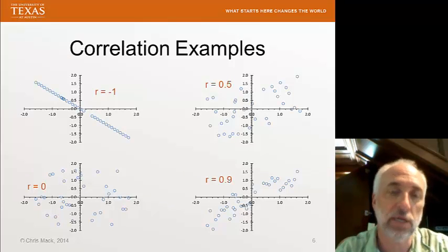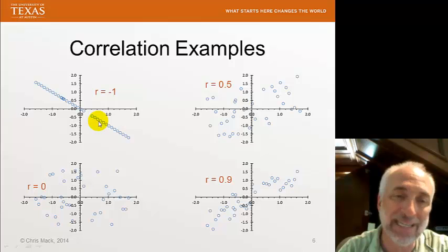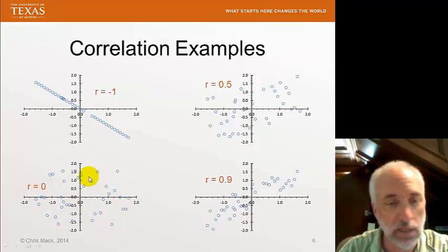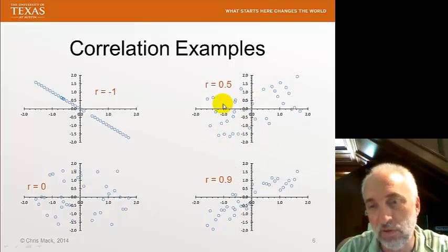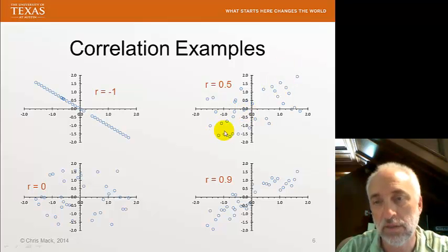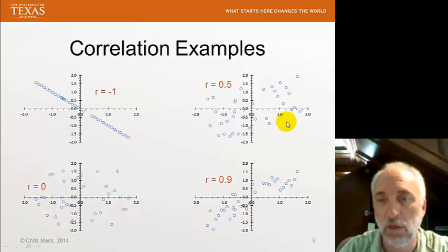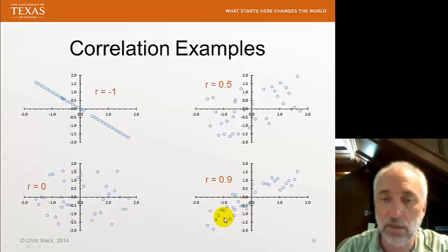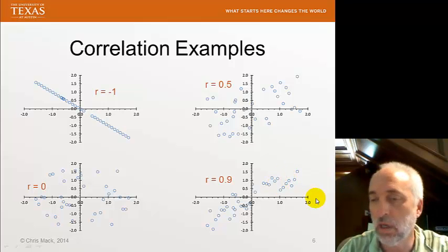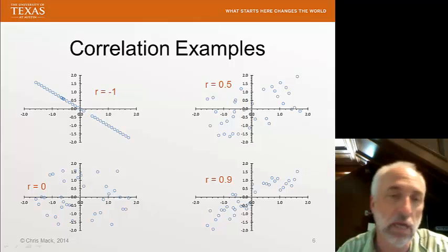Here's some examples of correlation. Here's R equal to minus 1. You see, it's a perfect straight line. It happens to be sloping downward. Here's R of 0. That's pretty much random scattering of data points. There's no general trend to be observed. And I see R equal to 0. Here's R of 0.5. There is a general trend. I have more data points in the first and third quadrants than I do in the second and the fourth. But it's a pretty weak relationship. There's a lot of scatter. And as R gets bigger, the spread of the data goes down and it approaches more and more of a straight line. And of course, when R equals 1, I would have a perfect straight line.